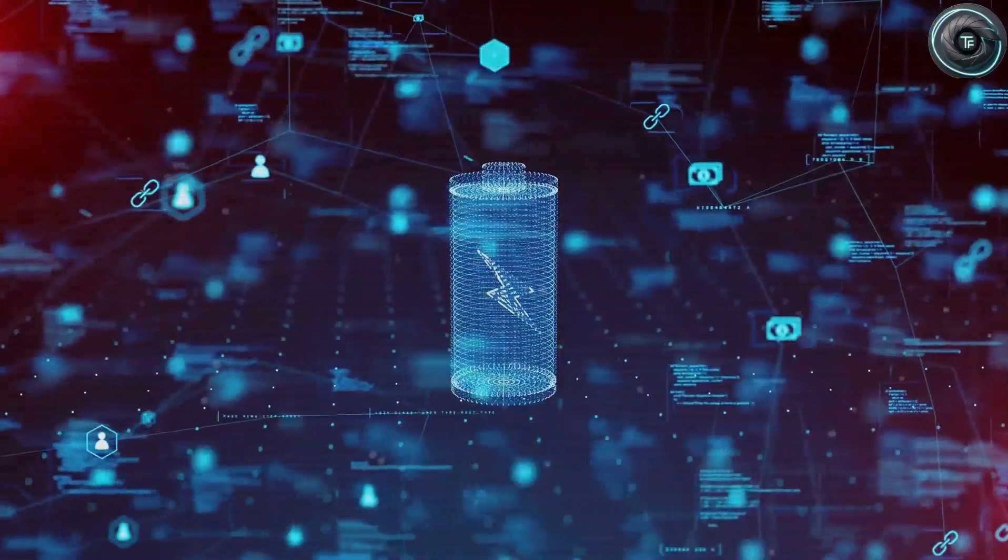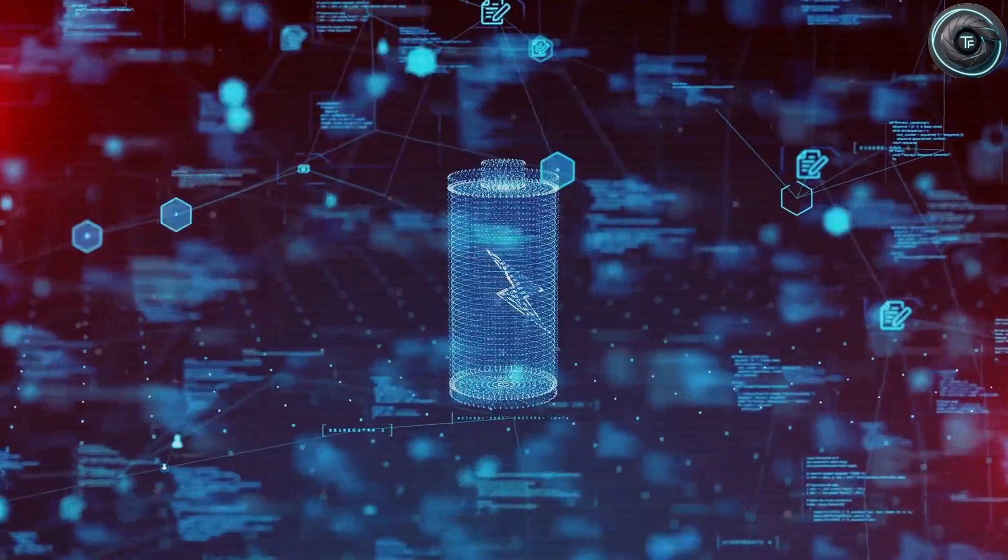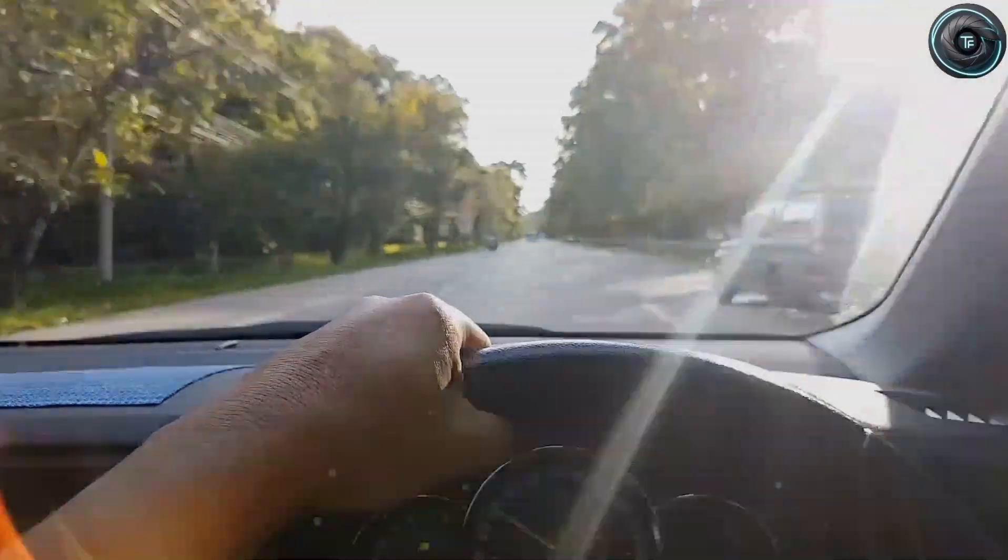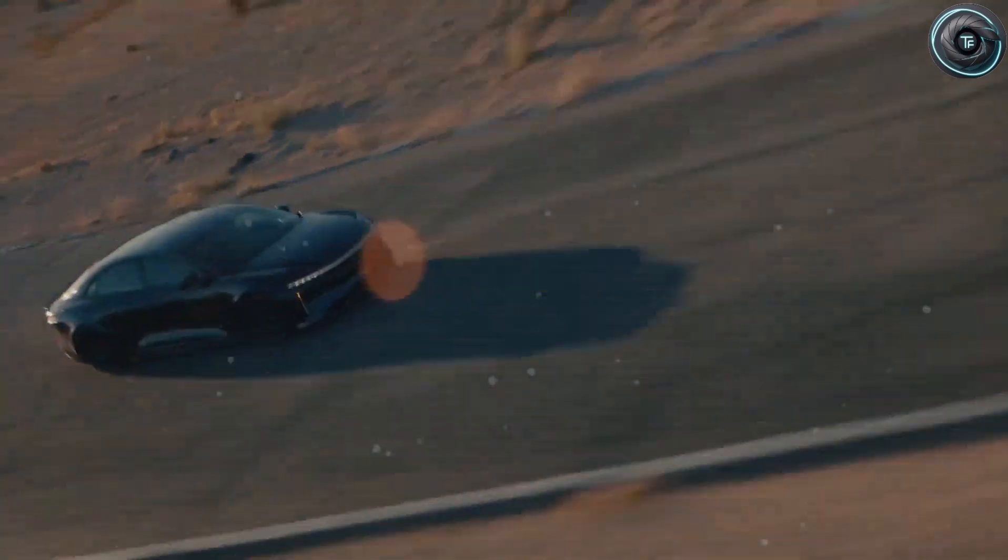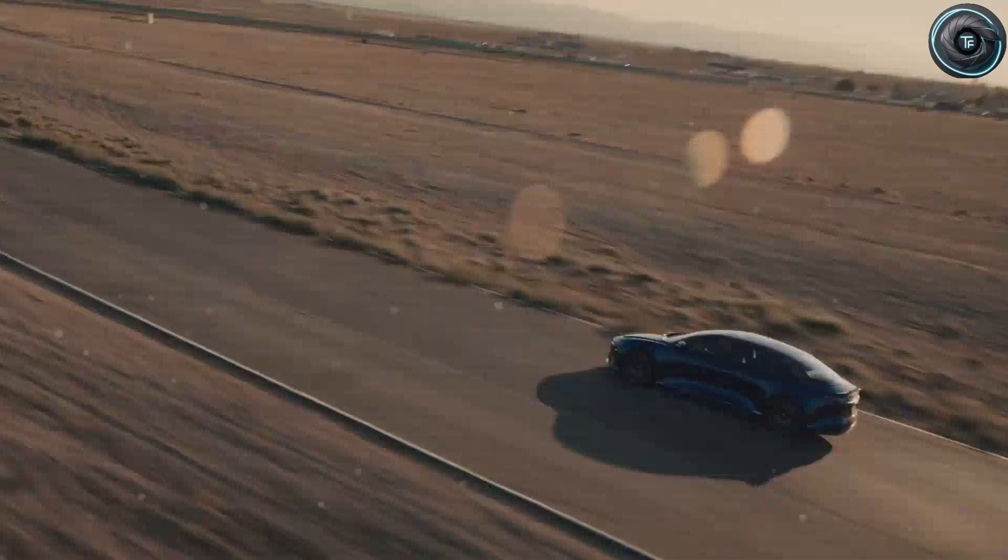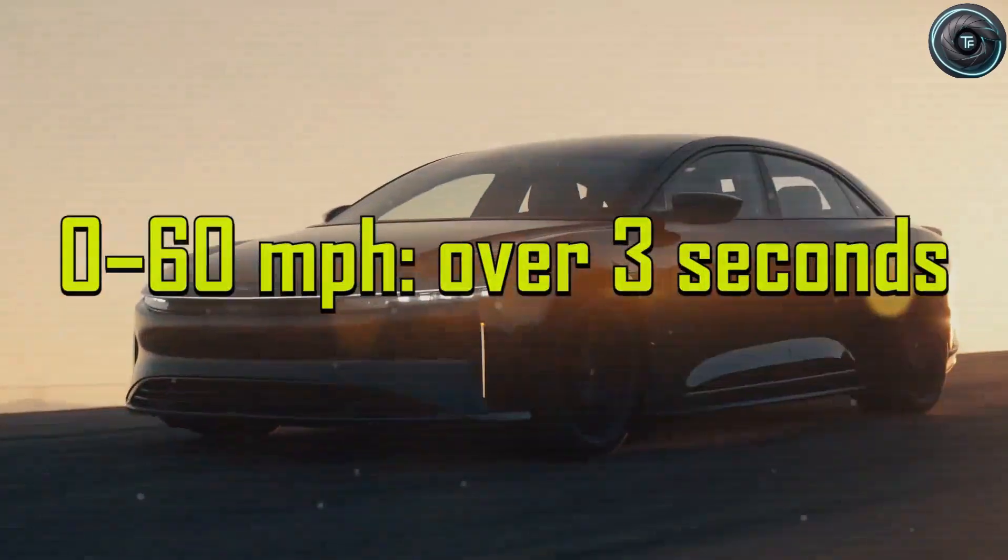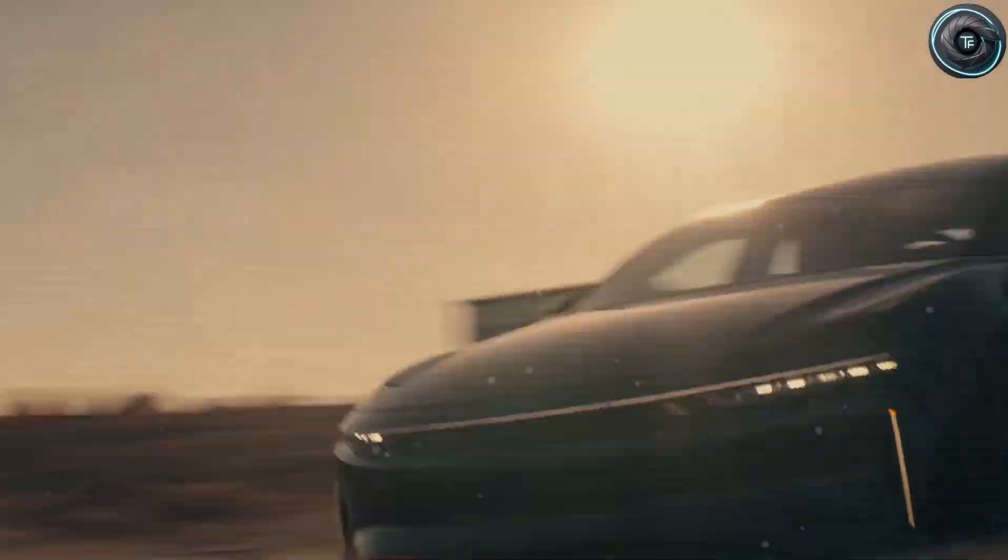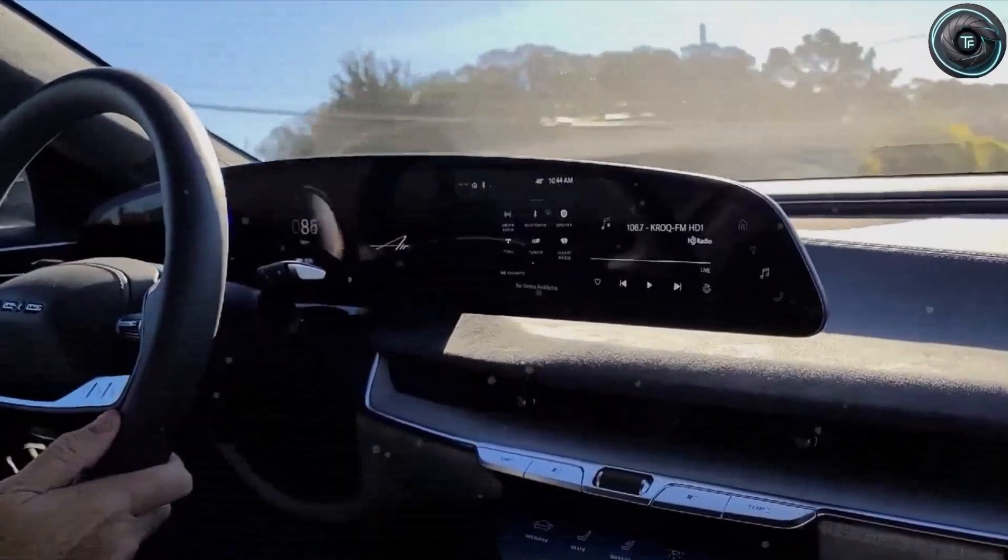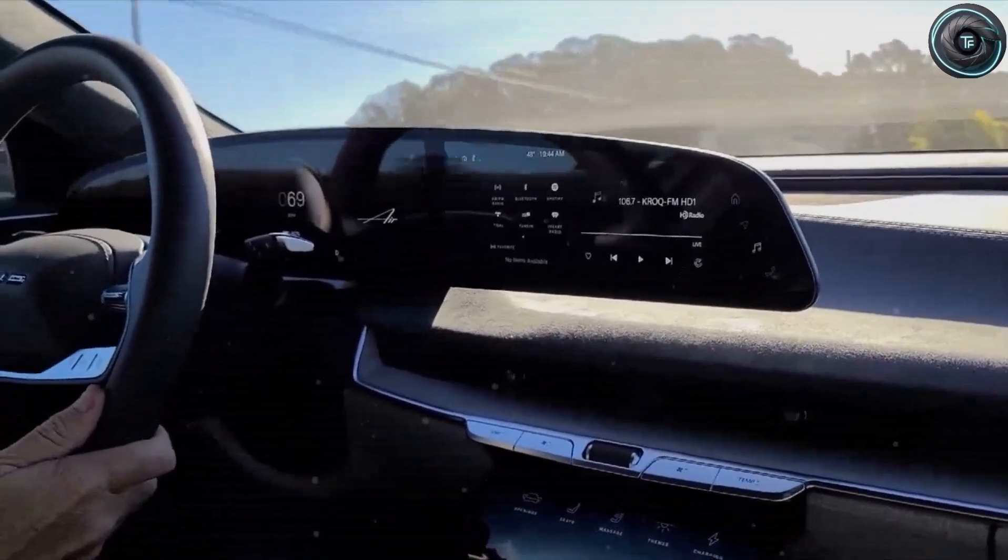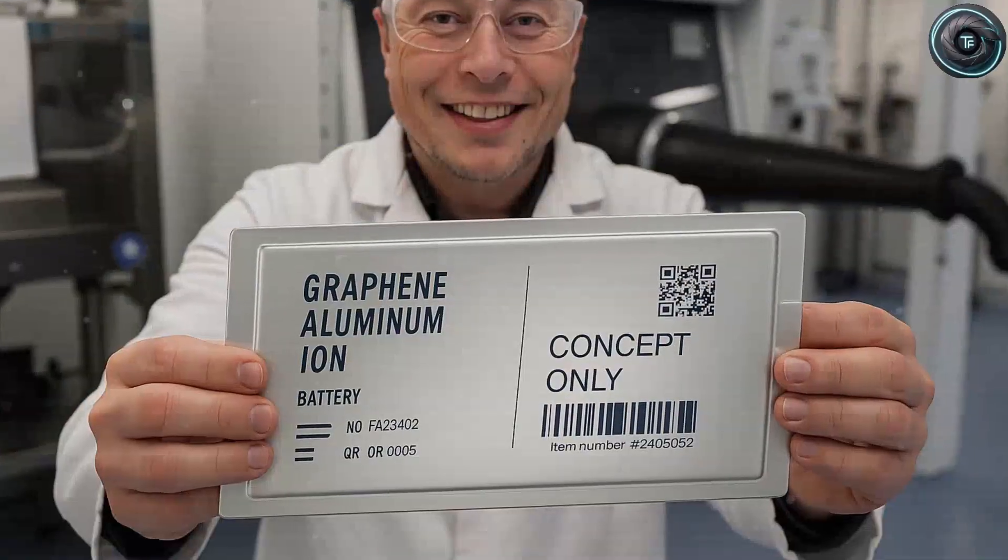In Tesla's internal tests, this translates to acceleration figures that shatter expectations. The current standard Model Y takes about seven seconds to go from zero to 60 miles per hour. With the aluminum-ion battery, that same car could hit 60 in just about four seconds without dual motors or performance tuning. One of Tesla's prototype vehicles, the small and compact Model 2, reportedly achieved the same sprint in 3.7 seconds with a single rear motor. Imagine driving an affordable electric sedan that feels like a high-end sports car worth five times as much.